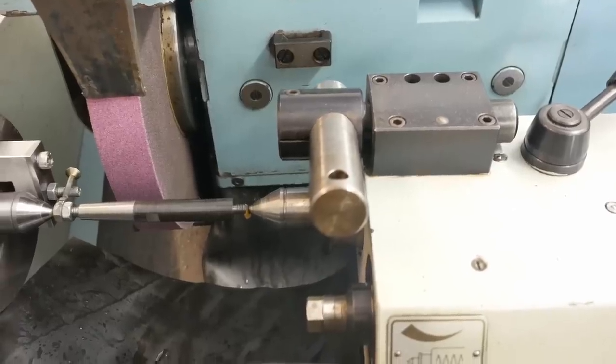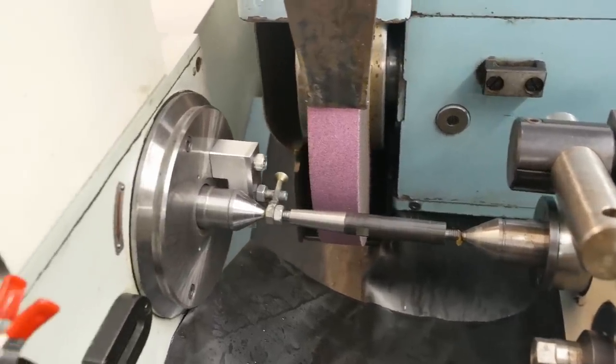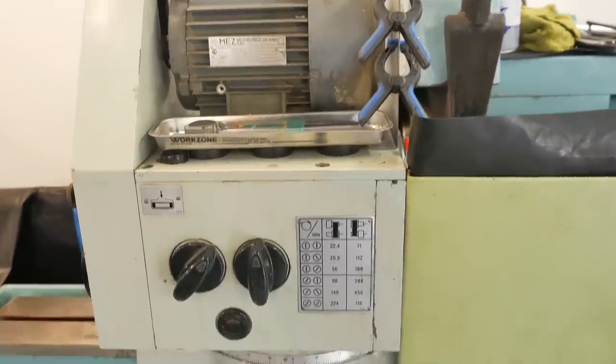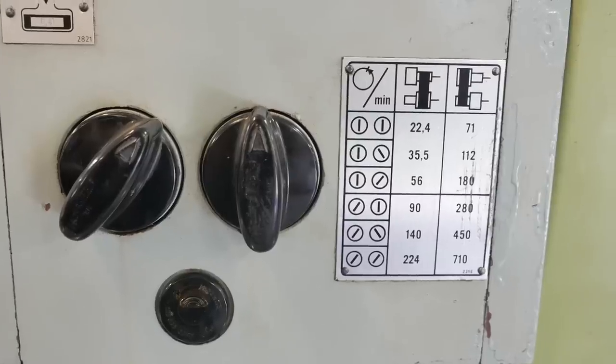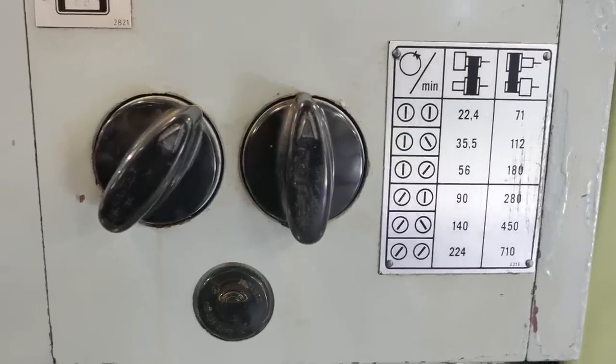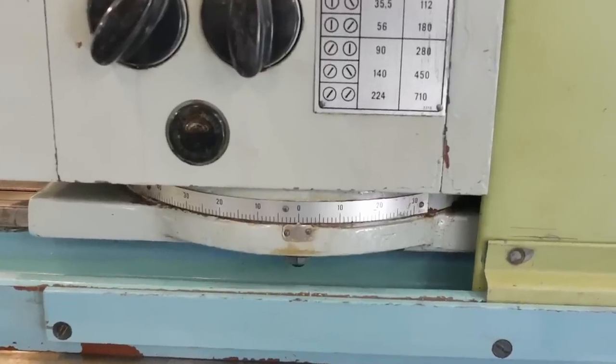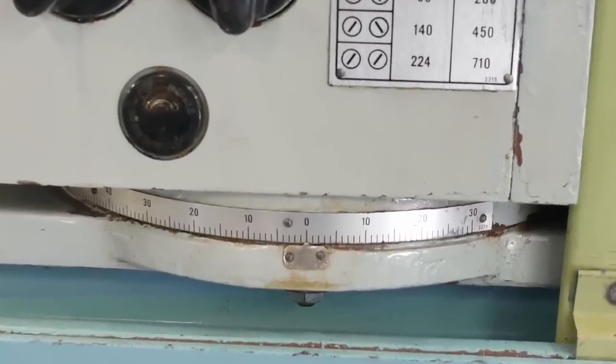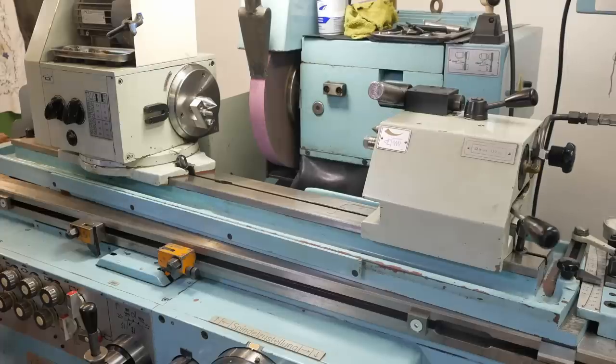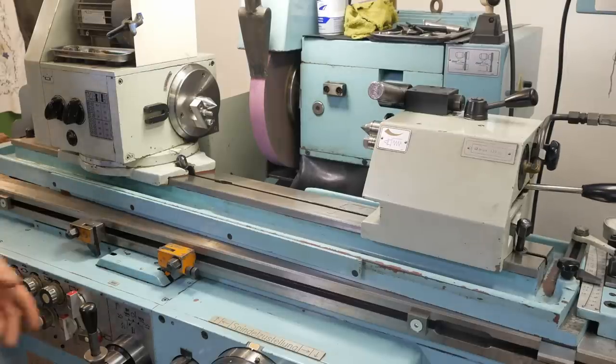The part to be ground is typically mounted between centers and driven off a drive dog from this powered headstock to rotate the work. It allows the part rotation to be either with the wheel or against the wheel. That powered headstock can be rotated up to 90 degrees to allow you to do face grinding. Once set up the tailstock can be opened and closed hydraulically through a foot switch for changing parts.